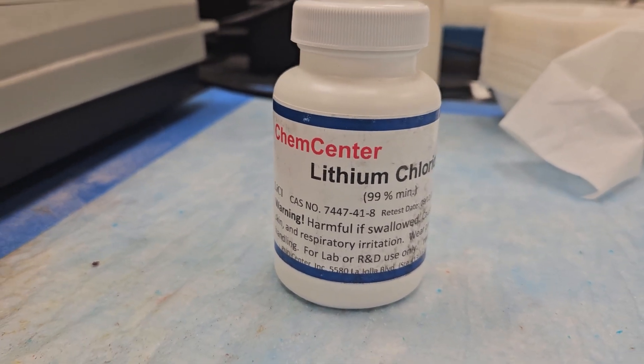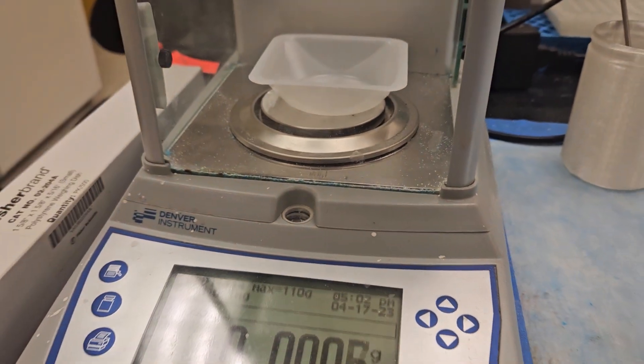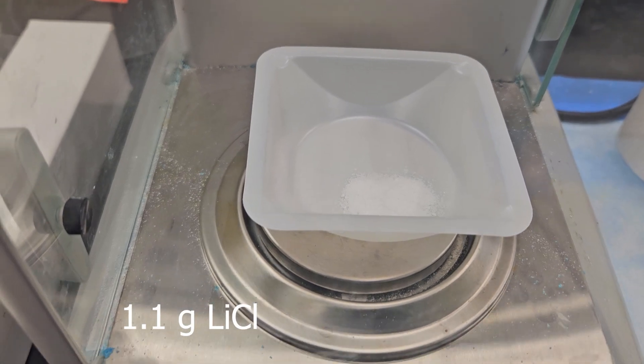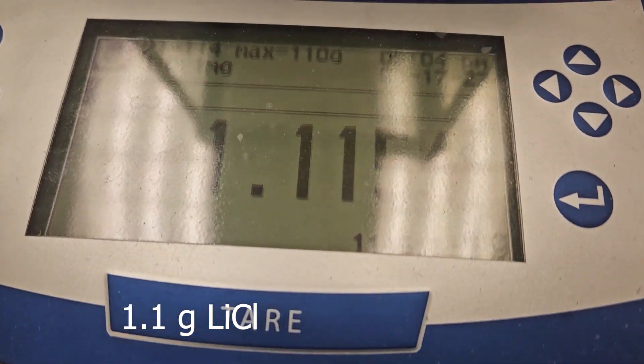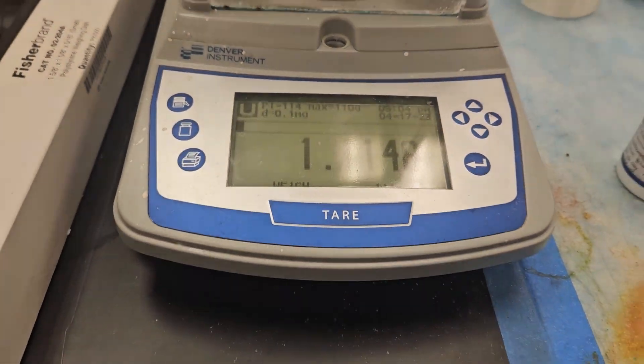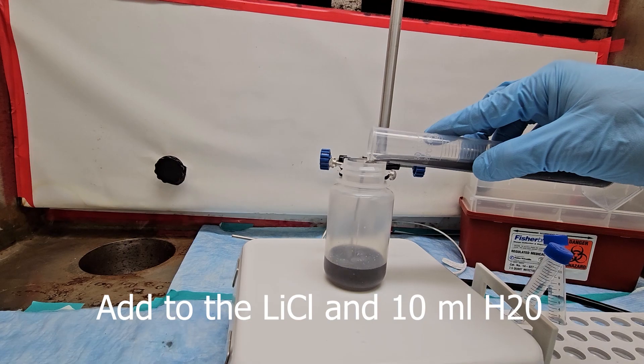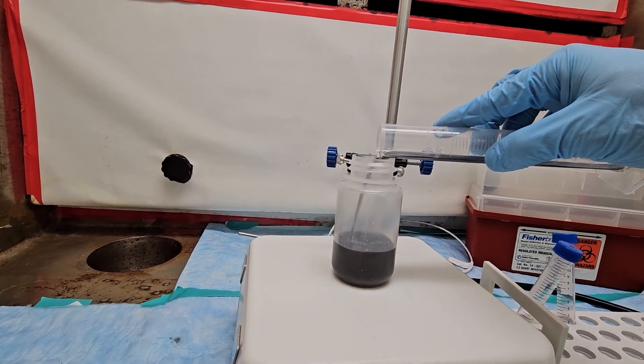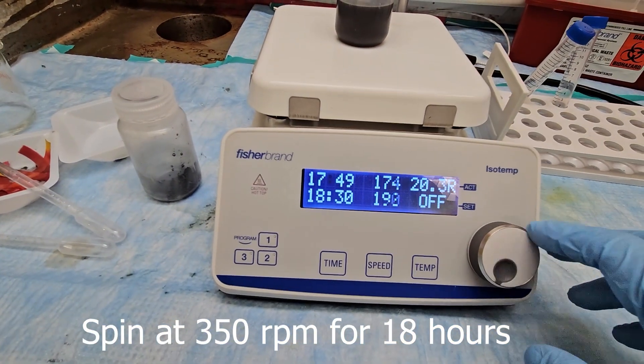As mentioned before, our delaminating reagent will be lithium chloride, and for that we've been measuring out approximately 1.1 grams. This will be combined with 10 milliliters of water in a plastic bottle on a stirring plate, with the 40 milliliter solution of multi-layer MXene flake diluted with water. This will be spun at 350 rpm for approximately 18 hours.